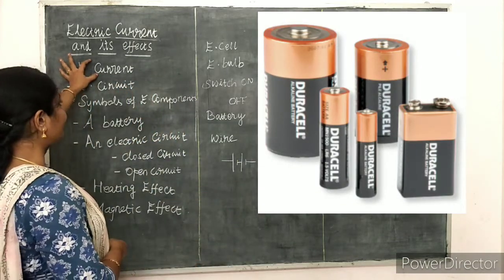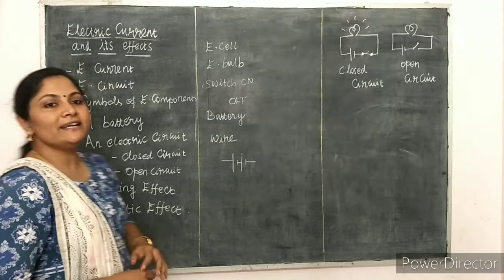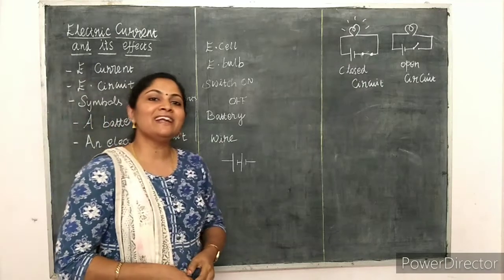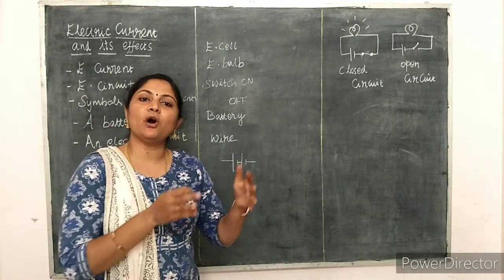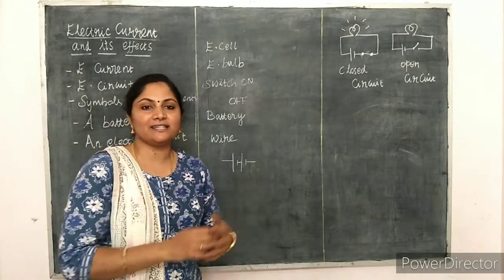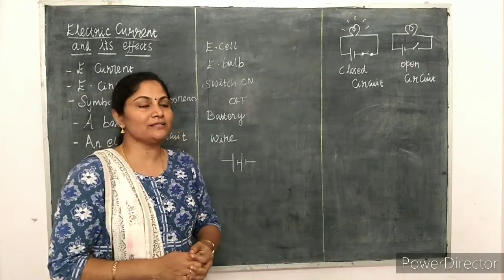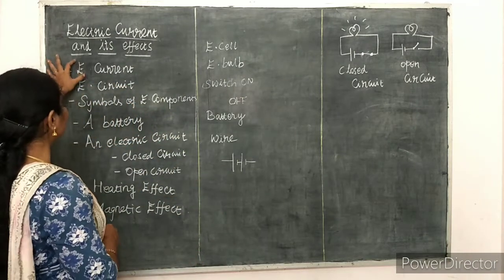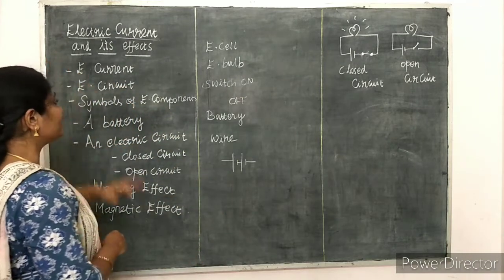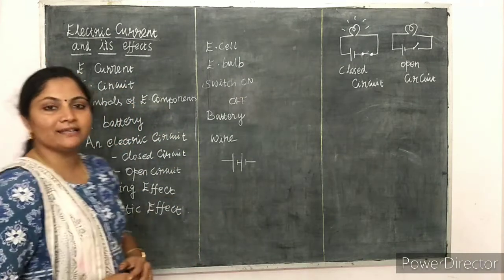So what is the meaning of electric current? It is nothing but the rate of flow of charges. That is said to be electric current.